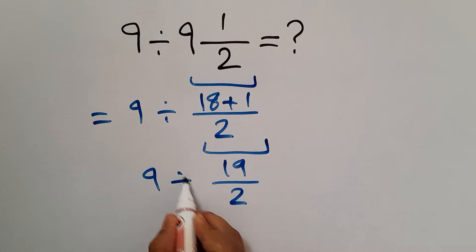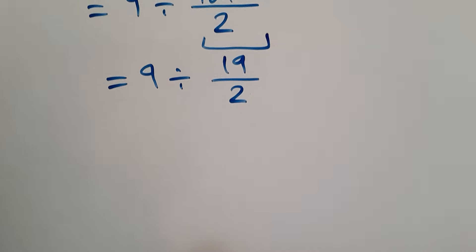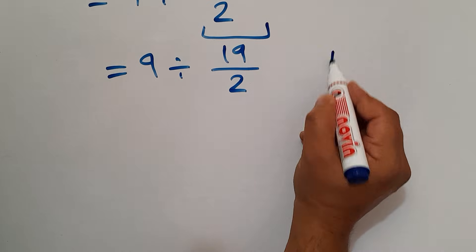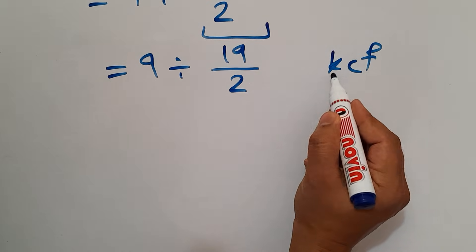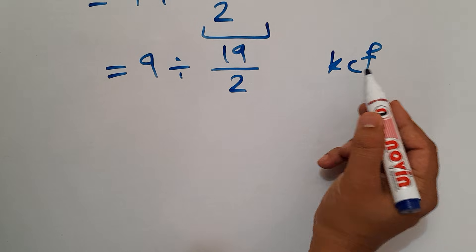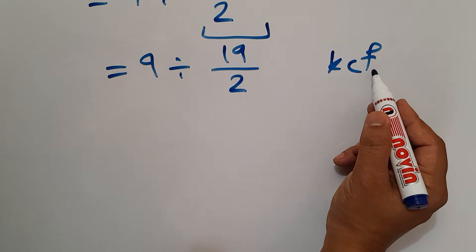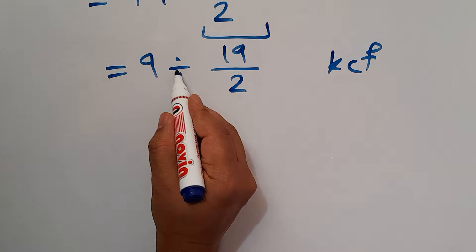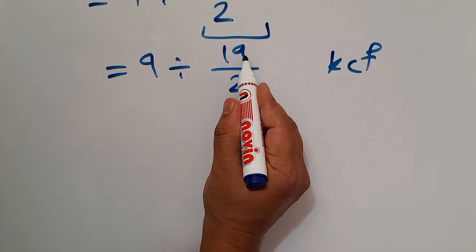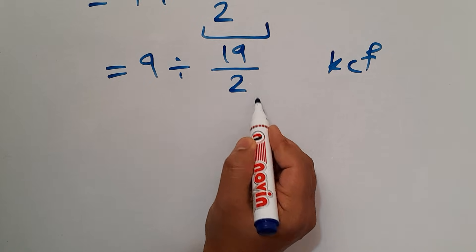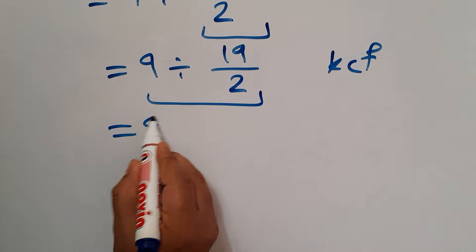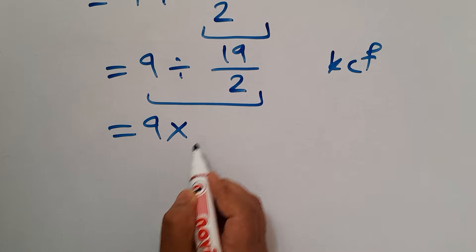Here we have 9 divided by this. Now according to the KCF rule, K stands for keep, C stands for change, and F stands for flip. Instead of 9 divided by 19 over 2, we can write 9 times 2 over 19.